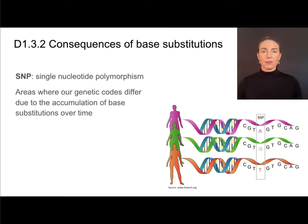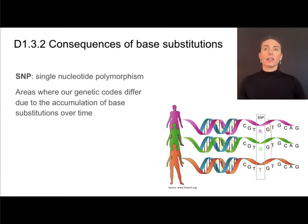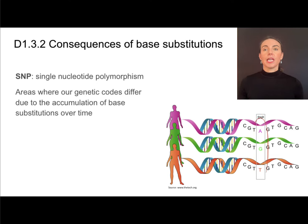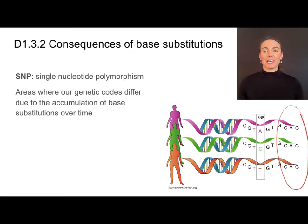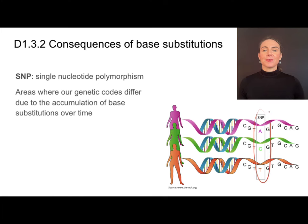In our genetic code, you and I have different base sequences, and those different base sequences are the results of mutations. Areas in our genetic code that have different possibilities for nucleotides are called SNPs — single nucleotide polymorphisms. These are areas in which our genetic codes differ due to the accumulation of mutations over time. It should be noted that you and I have an almost identical genome. Most of our genetic base sequences are identical; we only differ in these SNPs, and that is the result of mutations.